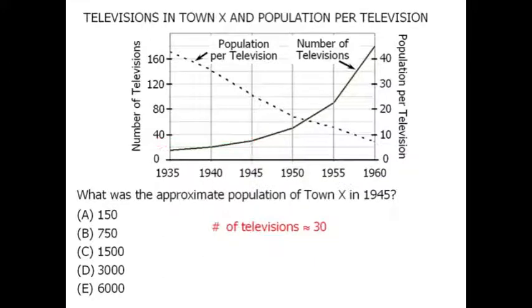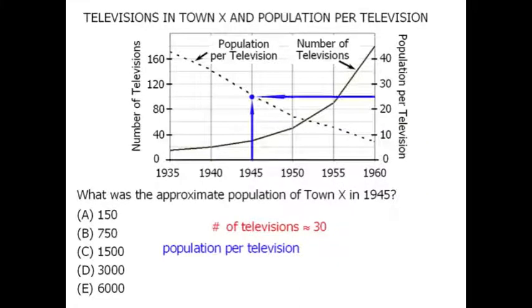Now we'll determine the approximate number of people per television set in 1945. This is equal to approximately 25. So this tells us that in 1945, there were approximately 25 people for every television set.